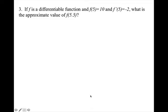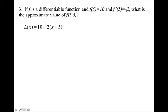Alright, let's try this one. If f is a differentiable function and f(5) equals 10 and f prime of 5 equals negative 2, what is the approximate value of f(5.5)? So I can write my equation of my tangent line because I have my point of tangency, which is (5, 10), and the slope of my tangent line, which is negative 2. Since I want to approximate at 5.5, I plug in 5.5 for x and I get 9. This is a very typical AP style question that assesses you on linear approximation.